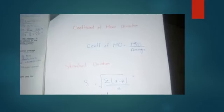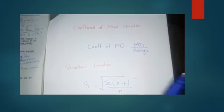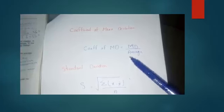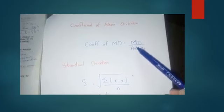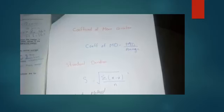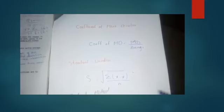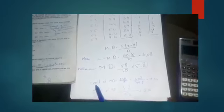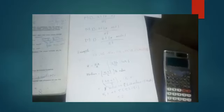In our last lecture we discussed mean deviation, and today we will discuss the coefficient of mean deviation. The formula is: coefficient of mean deviation equals mean deviation divided by the average, where the average is the arithmetic mean or median. We will now calculate it. The mean deviation is 6.08, divided by 49.6 which is the mean.